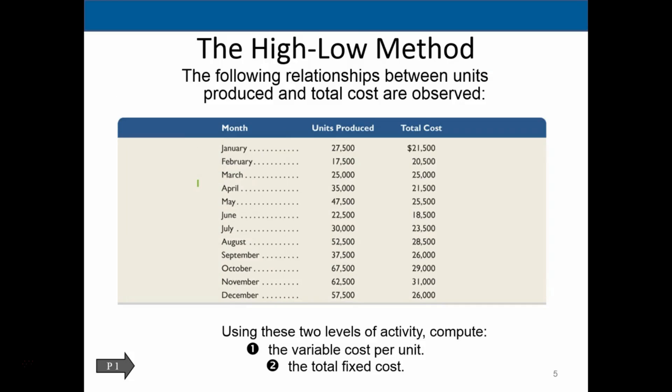So if we're going to use the high-low method, the following relationship between units produced and total costs are below. So we have the units produced and the total cost. Units produced, total cost. Similar to what we had graphed in the prior slide. So using these two levels of activity, compute the variable cost per unit and the total cost per unit.